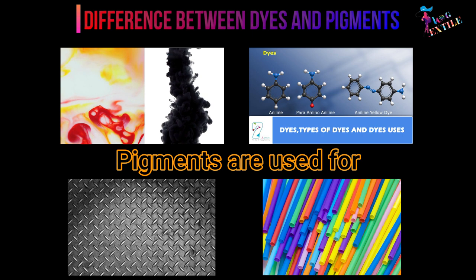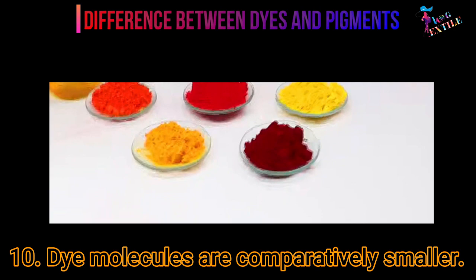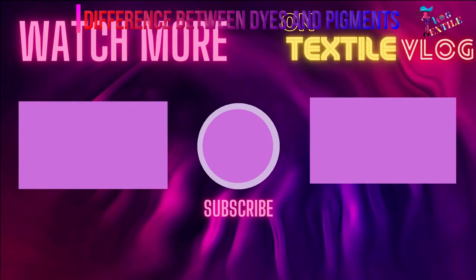coloring plastics, metal paints, and varnishes. Ten: dye molecules are comparatively smaller, but pigment particles are about one to two microns in size. Thanks for watching — please subscribe to this channel to get more updates.